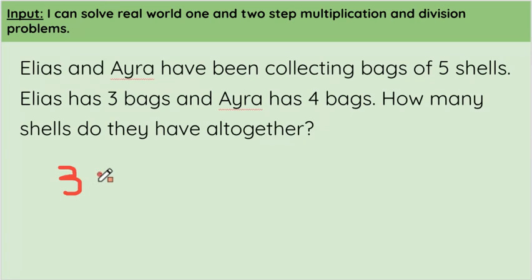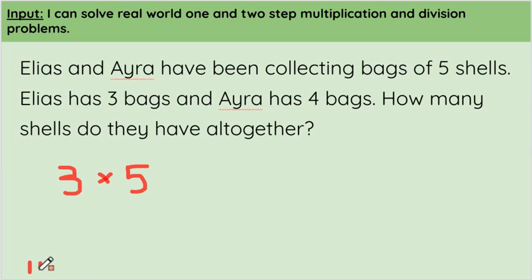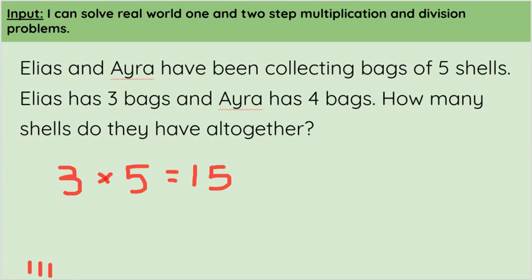Three bags of five shells — so three multiplied by five. Let's count in fives: five, ten, fifteen. Perfect, so three multiplied by five equals fifteen. So that's how many shells Elias has.